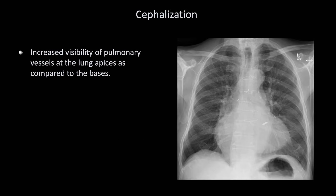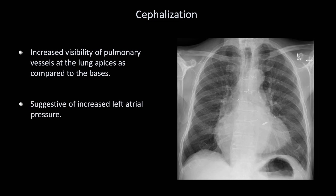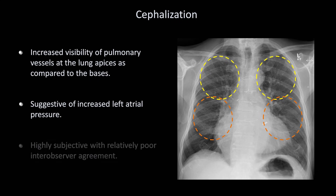The term cephalization refers to increased visibility of pulmonary vessels at the lung apices as compared to the bases, and is suggestive of increased left atrial pressure. In this example, if we compare the average density of the pulmonary vessels in the apices to the mid-lung zones, we can see that they are more prominent in the apices. Unfortunately, cephalization is highly subjective and has relatively poor inter-observer agreement, limiting its utility as a radiographic distinguishing feature of pulmonary edema.